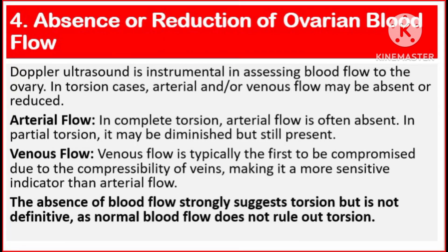Number 4: Absence or reduction of ovarian blood flow. Doppler ultrasound is instrumental in assessing blood flow to the ovary. In torsion cases, arterial and/or venous blood flow may be absent or reduced. Arterial flow: in complete torsion, arterial flow is often absent; in partial torsion, it may be diminished but still present. Venous flow is typically the first to be compromised due to the compressibility of veins, making it a more sensitive indicator than arterial flow.